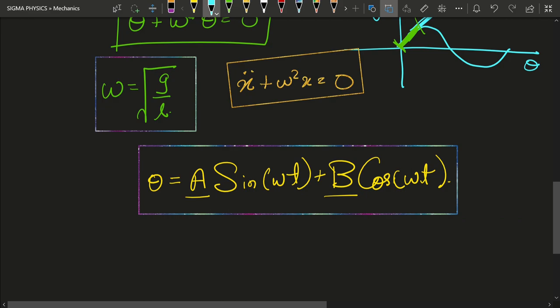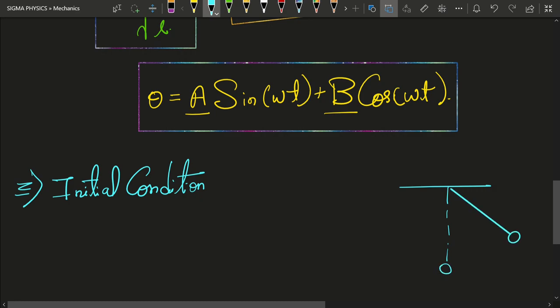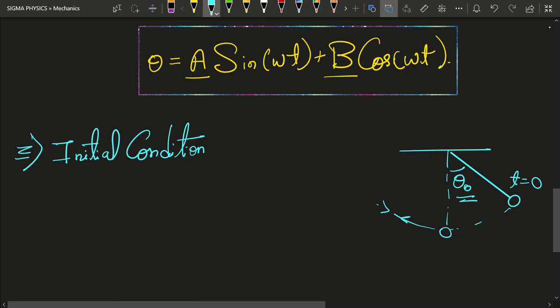We can find A and B by using initial conditions—that is, what is θ at t = 0. Let's look at some of the initial conditions, some possible initial conditions. Let's say this was my simple pendulum. What I do is, at t = 0, I displace the pendulum by an angle θ₀ and then leave it. It is just going to follow that path—it is going to execute simple harmonic motion. So let me use that condition over here.